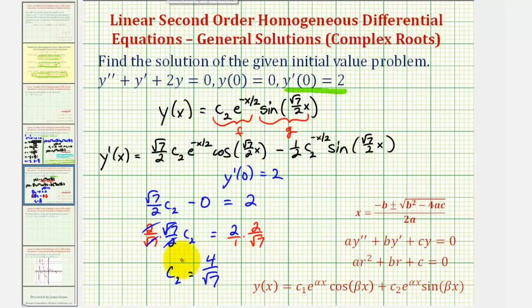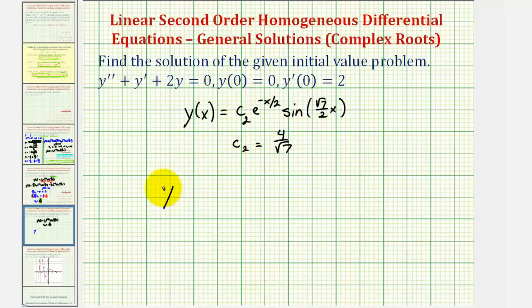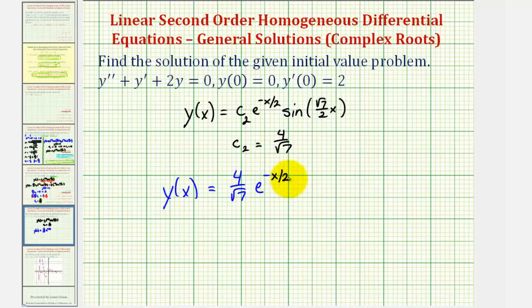Now we have all the information we need. Since c sub two equals four divided by square root seven, the solution to the initial value problem is y of x equals four divided by square root seven, times e to the power of negative x divided by two, times sine of square root seven divided by two times x.